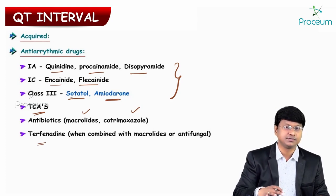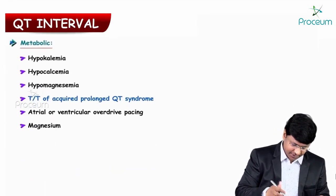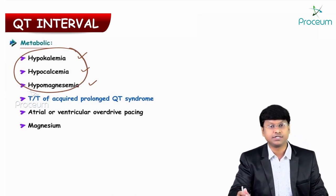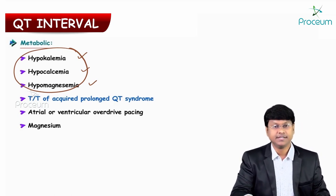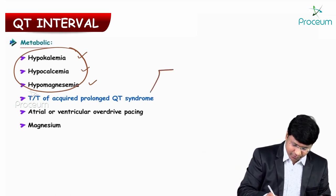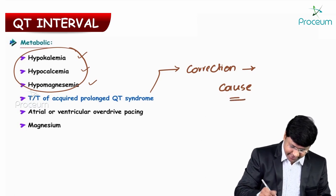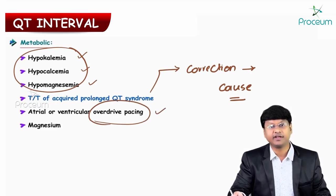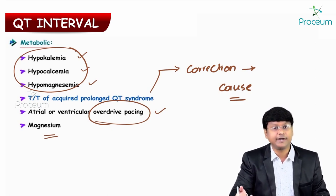These are the drugs which cause torsades de pointes. Electrolyte abnormalities — hypokalemia, hypocalcemia, and hypomagnesemia — are the three important electrolyte abnormalities which can cause prolonged QT interval. The treatment of acquired prolonged QT interval includes correction of the underlying cause, overdrive pacing (atrial or ventricular), and intravenous magnesium sulfate.